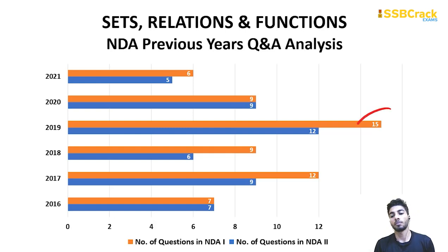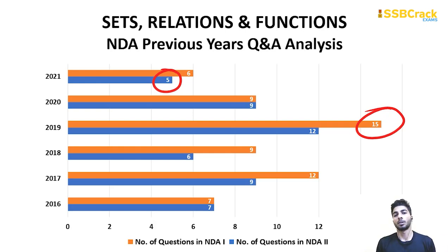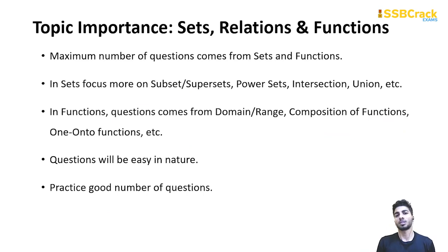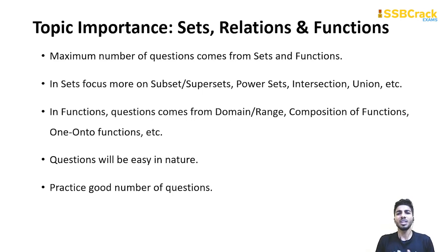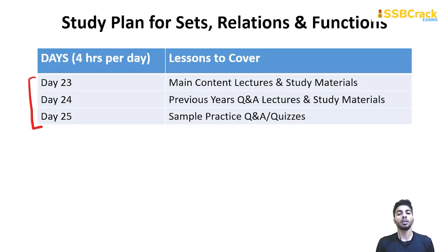Sets, relations and functions has a maximum of 15 questions and a minimum of 5. This topic also supports other chapters — you'll encounter functions in integration and sets in probability. Cover subsets, supersets, power sets, types of functions (one-one functions), equivalence relations and their properties, and the period of a function. Devote 4 hours per day from day 23 to day 25, covering main content, previous year questions, and sample practice.